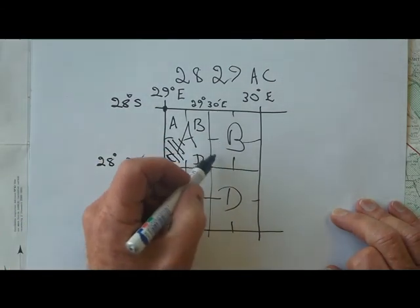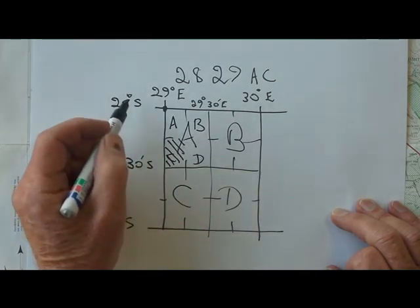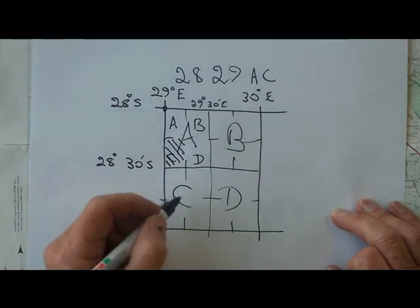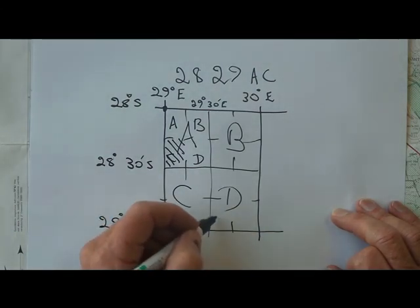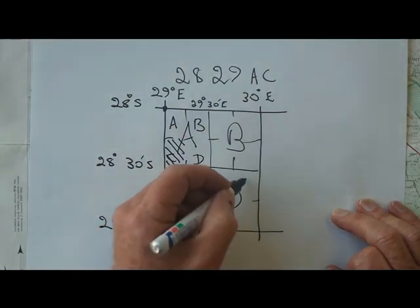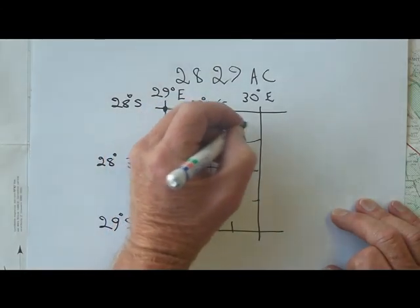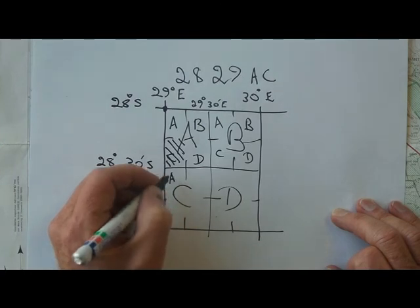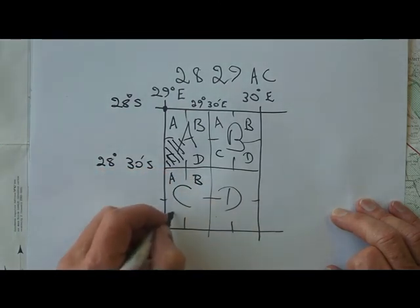This one over here, for instance, would be 2829BC. This one, CC. This one, DC. This one, DB. So we can just fill in all of those quickly, and you can see that system is very straightforward.